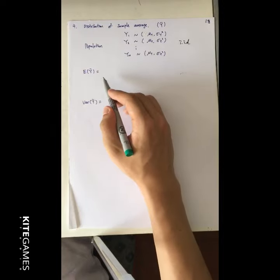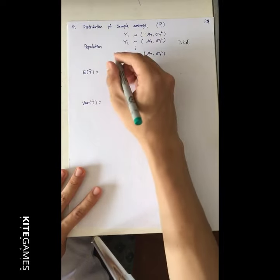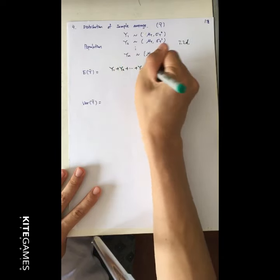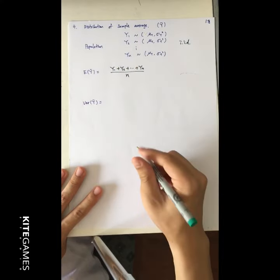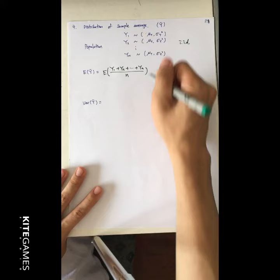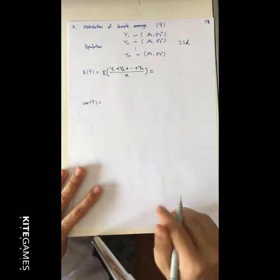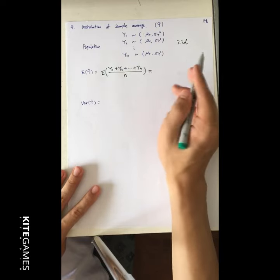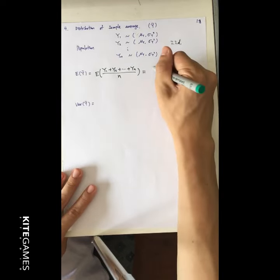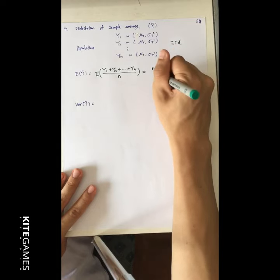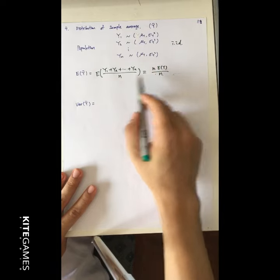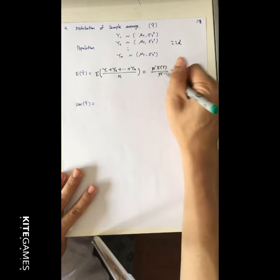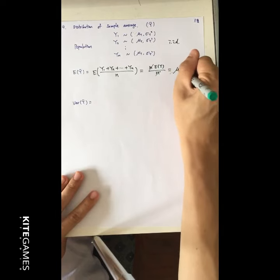What is the mean of y-bar? Y-bar equals (y_1 + y_2 + ... + y_n) divided by n. So E[y-bar] equals (1/n) times the sum of expected values. Since all y_i share the same distribution, this equals (1/n) times n·E[y], so the n's cancel and we get simply mu_y.